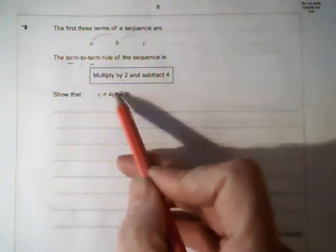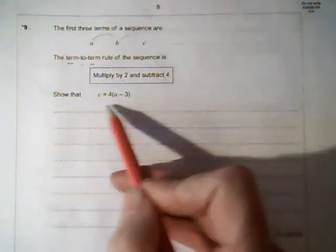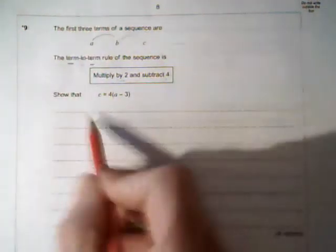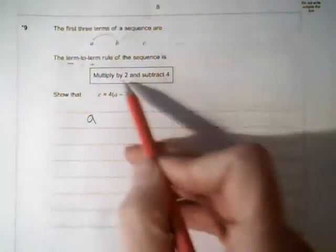Show that C is 4 bracket A minus 3. So it's gone from A getting to C. So we need to start at A and work it along term to term using this rule.